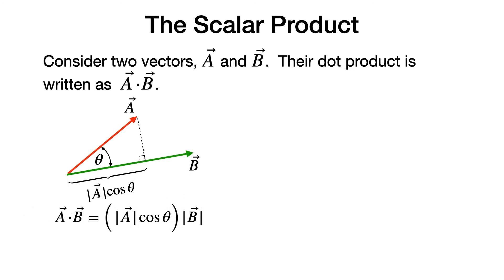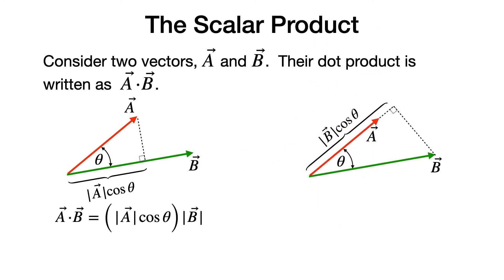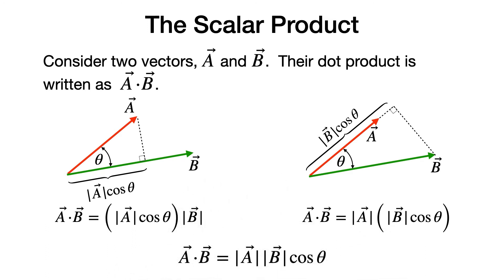So the dot product is given by the magnitude of a times the cosine of theta times the magnitude of b. On the other hand, if we consider how much of vector b points in the direction of a, using the same angle theta, that component of b is the magnitude of b times the cosine of theta. So in either case, whether we project part of a in the direction of b or project b in the direction of a, we get the same result: the dot product of a and b is the magnitude of a times the magnitude of b times the cosine of the angle between them.